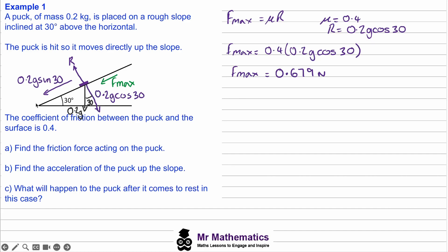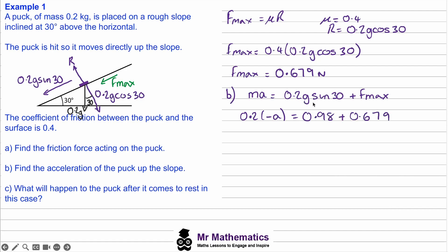As the puck travels up the slope, both the weight component and friction act against it. The net force equation ma gives: 0.2g sin30 plus the maximum friction equals 0.2 times negative a, since the puck is decelerating. We can work out the weight component as 0.98 N, and dividing both sides by negative 0.2 gives an acceleration of negative 8.3 metres per second squared.